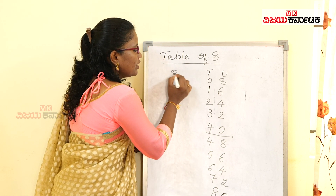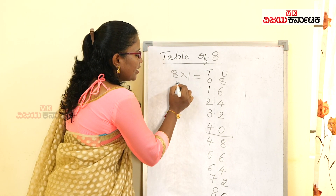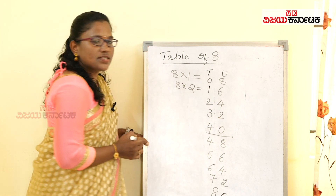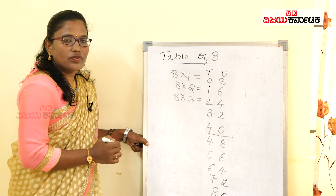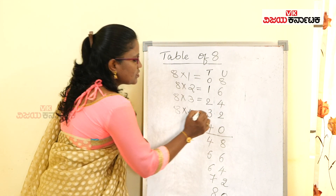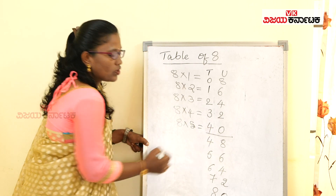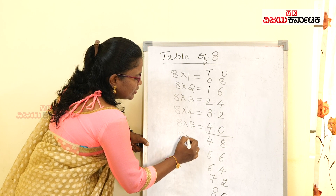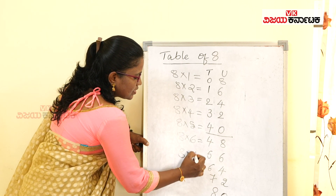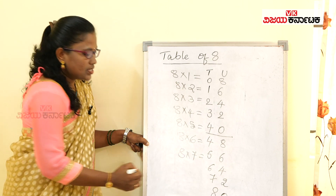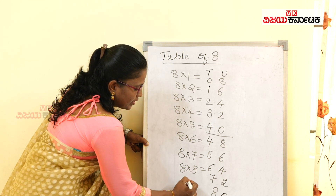Let's go through the table: 8 × 1 is 8. 8 × 2 is 16. 8 × 3 is 24. 8 × 4 is 32. 8 × 5 is 40. 8 × 6 is 48. 8 × 7 is 56.